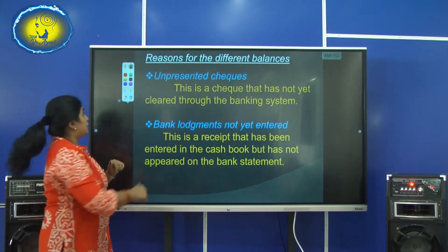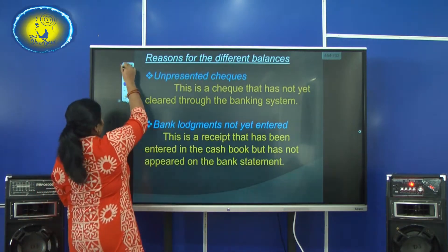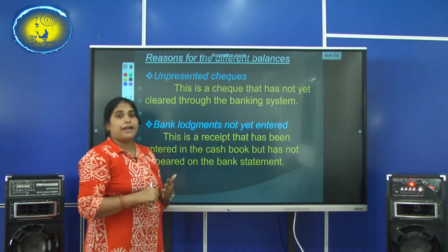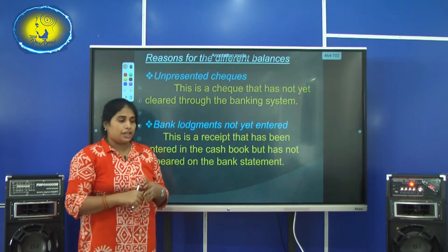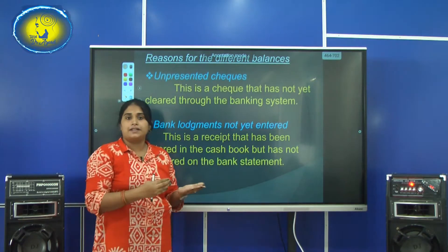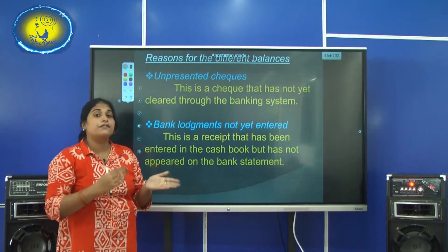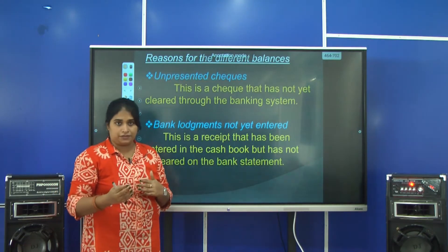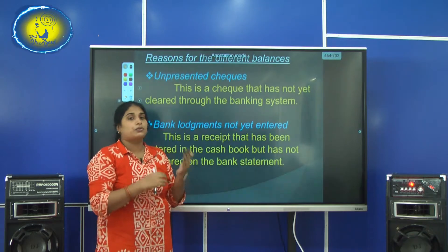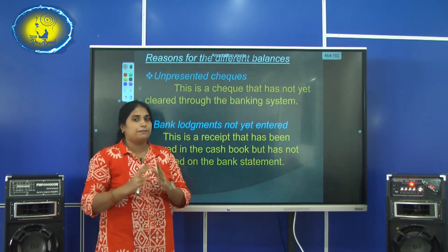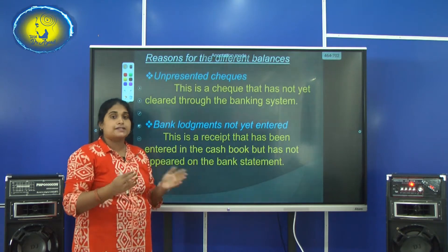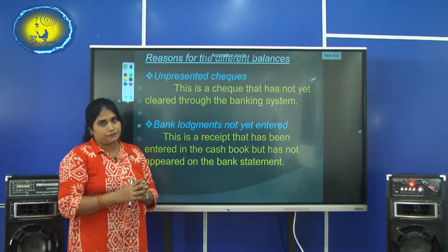Now we will see what are the reasons for these differences. When you get the bank statement at the end of the month, if you find your cash book balance and the bank statement balance differ with each other — for example, your cash book balance shows 10,000 and the bank statement balance shows only 9,500 — there is a 500 difference. Now we will see why there is a difference.